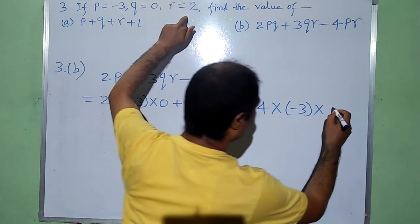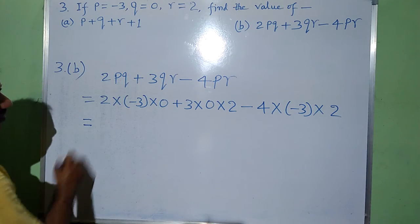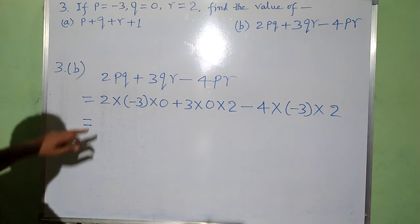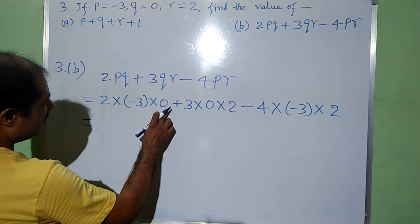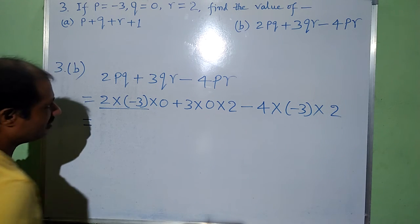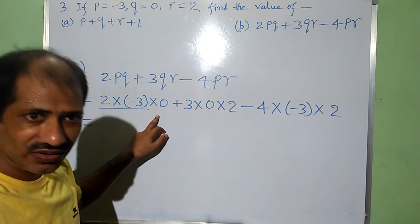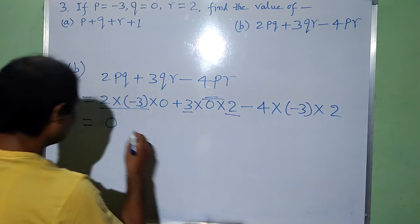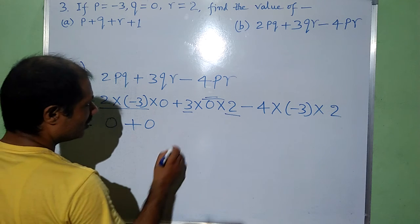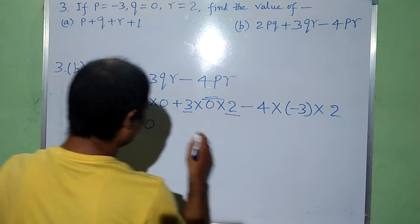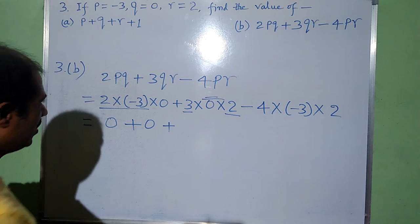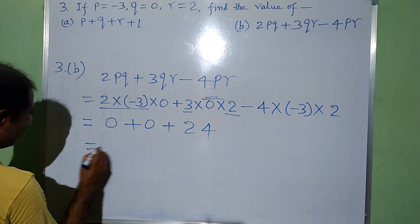For the minus 4pr term, value of p is minus 3 and value of r is 2. Now, any number multiplied by 0 gives result 0, so the first two terms become 0 plus 0. For the remaining term, minus into minus gives plus, so 4 times 3 is 12, times 2 is 24. Finally we have 24.